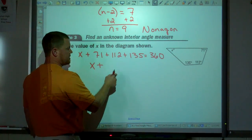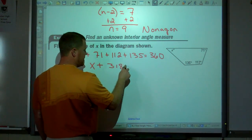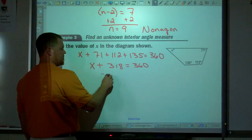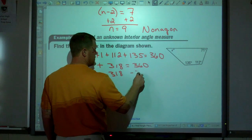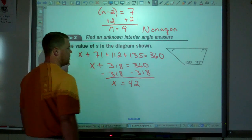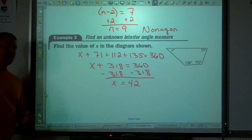So x plus, combine like terms, we get 318 equals 360. Subtract 318 from both sides. x equals 42. Find the value of x. Found it.